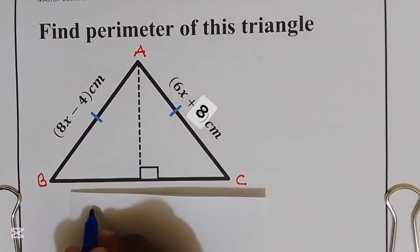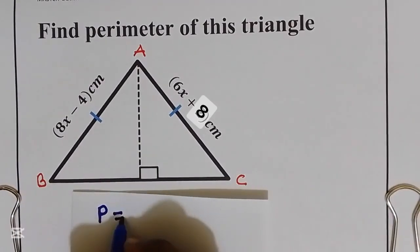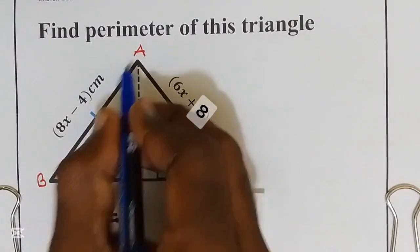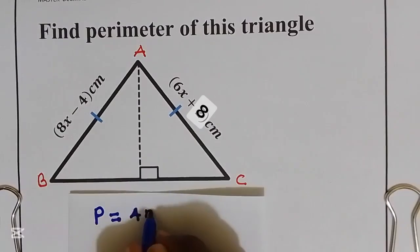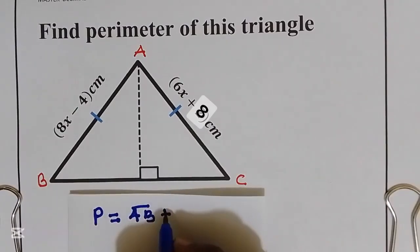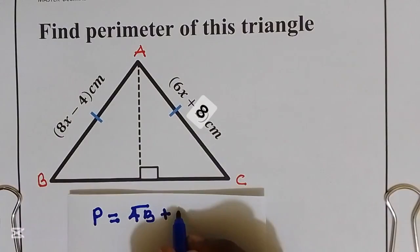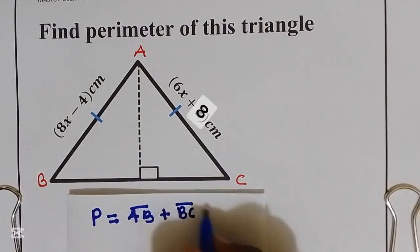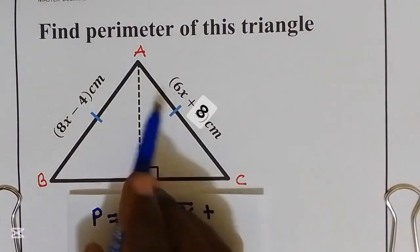To find the perimeter of this triangle, this is the same as taking distance AB plus distance BC plus distance AC.